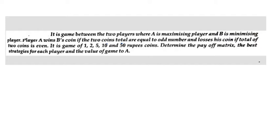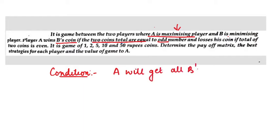So now what is given in the question? It says it is a game between two players A and B where A is maximizing. Underline this because maximizing means we have to put the signs as per the requirements or conditions with A considering that A is in power since it is a maximizing player. B is minimizing. Player A wins B's coin if two coins total are odd number. So condition first: A will get all B's coins if sum of their total is odd.